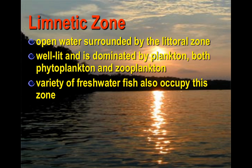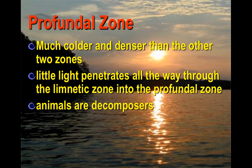The limnetic zone is the open area right in the middle of the pond or lake. It is predominantly well lit and a lot of freshwater fish are found in that area. The profundal zone is the bottom of the pond or lake — it's much colder and denser. Light can penetrate through but it's not as intense, and the animals located here are decomposers or scavengers.